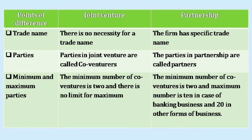Let us discuss the distinction between these two. The first difference is trade name. In a joint venture, there is no necessity for a trade name. Whereas in case of a partnership firm, the firm has a specific trade name. The second difference is parties.